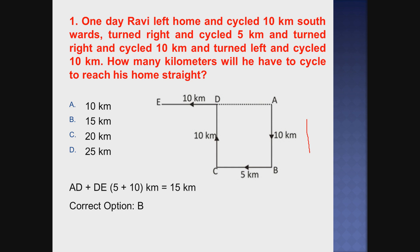For understanding purpose only, I am just mentioning the variables. So south direction - Ravi travels from A to B, 10 km. After that, he turns right. After travelling 10 km, he turns right again, and travels 5 km. After that he turns right again, and travels 10 km. Then finally he turns left and is travelling 10 km.